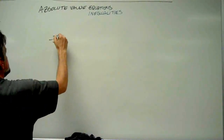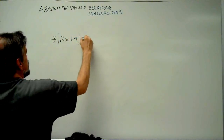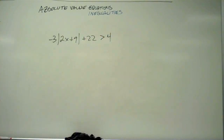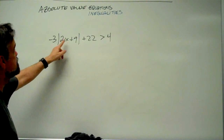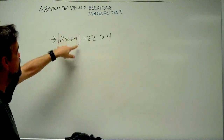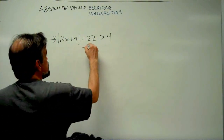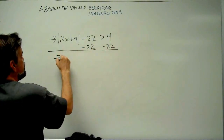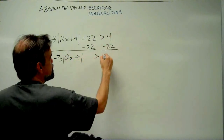Let's do a messy one: negative 3 times the absolute value of 2x plus 9, plus 22, is greater than 4. First, think about order of operations — x is multiplied by 2, then 9 is added, then the absolute value is taken, then multiplied by negative 3, then 22 is added. So we get rid of that last step first: subtract 22 from both sides, giving negative 3 times the absolute value of 2x plus 9 is greater than negative 18.